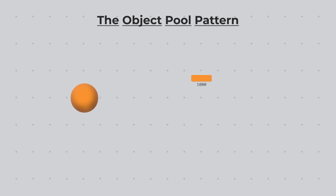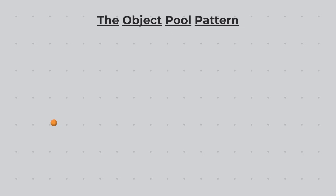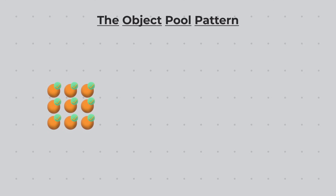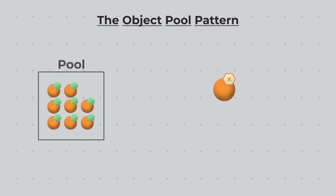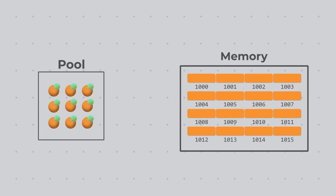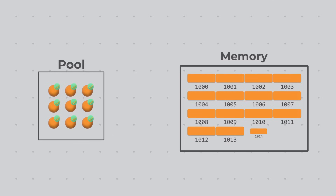Simply put, the object pool pattern says: instead of spawning an object and allocating memory for it when needed, and then destroying it and freeing up that space when done, you should instead spawn a whole bunch of these objects when the game begins and mark them as not in use — this is your pool. When you need one, you take it out of the pool, mark it as in use, and when you're done, you return it back to the pool. This saves CPU usage because marking an object as in use or not is far less costly than creating and destroying it, and since we never destroy the objects, their memory is reserved, eliminating fragmentation risk.